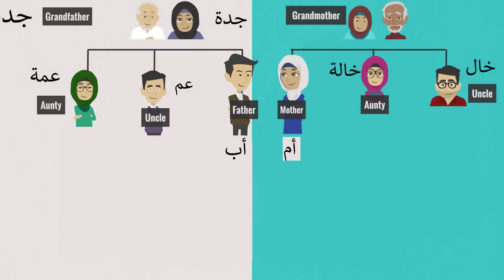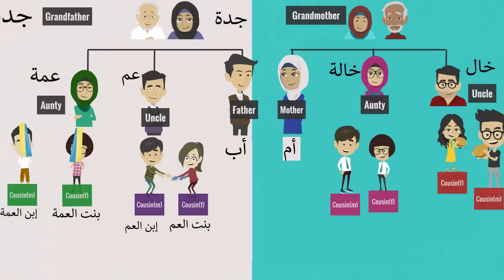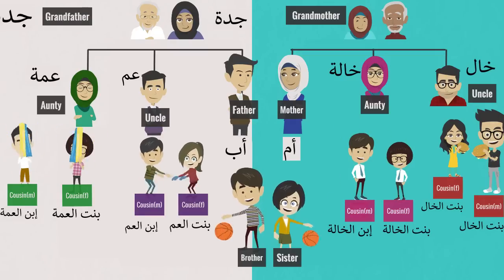Now we see the cousins. Ibn al-Am — son of uncle. Bint al-Am — daughter of uncle. Ibn al-Amma — son of aunt. Bint al-Amma — daughter of aunt. And the cousins from the mother's side: Ibn al-Am — son of uncle. Bint al-Am — daughter of uncle. Ibn al-Am — son of aunt. Bint al-Am — daughter of aunt. And for brother and sister: Ach — Brother, Ucht — Sister.